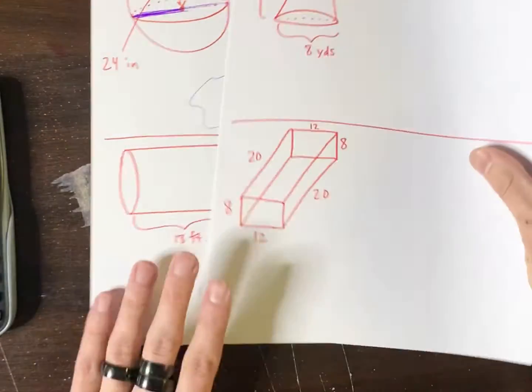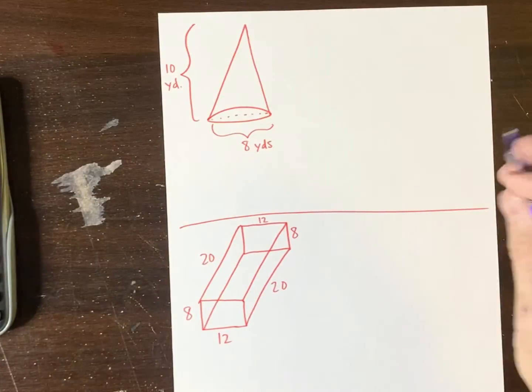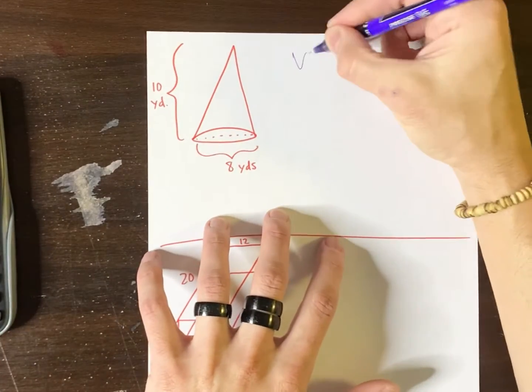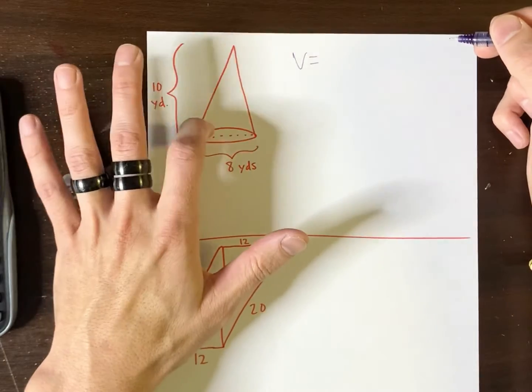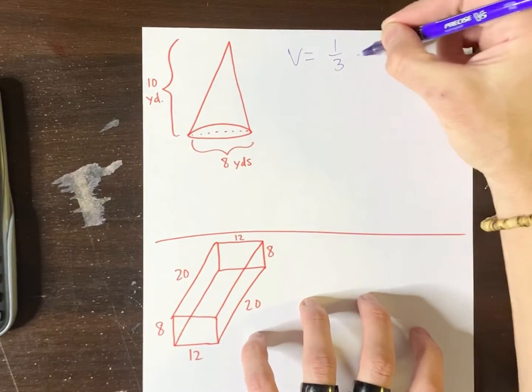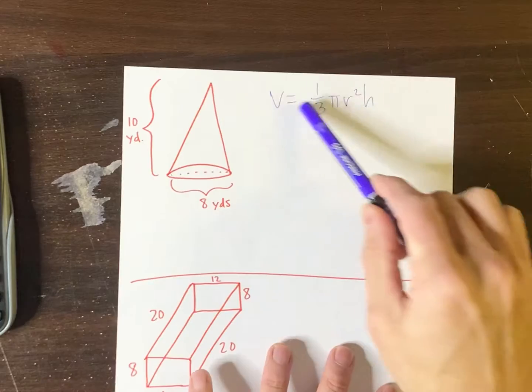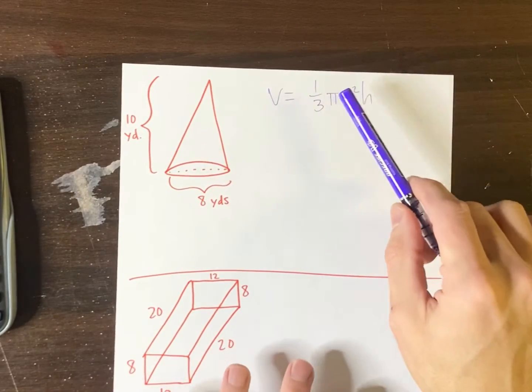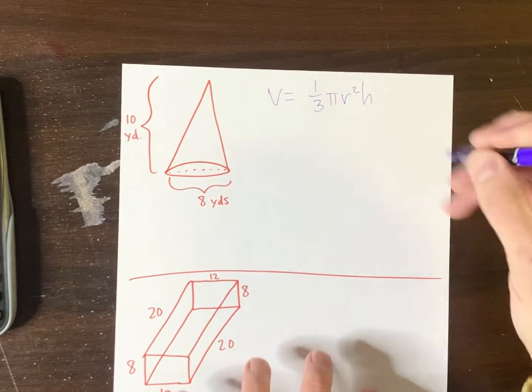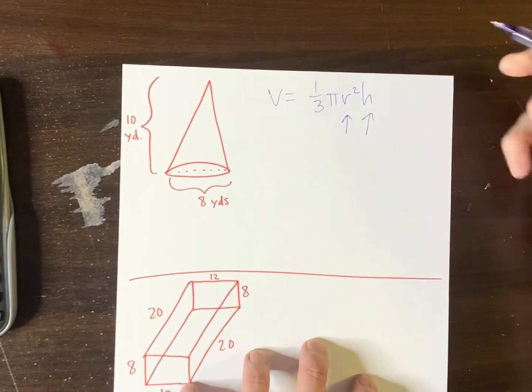There it is. A couple more, and then we're done. How about this one here? You look through your notes, and they'll tell you that the volume of a cone is one-third pi r squared h. Maybe they have it written differently. But at the end of the day, this is the formula that we need.